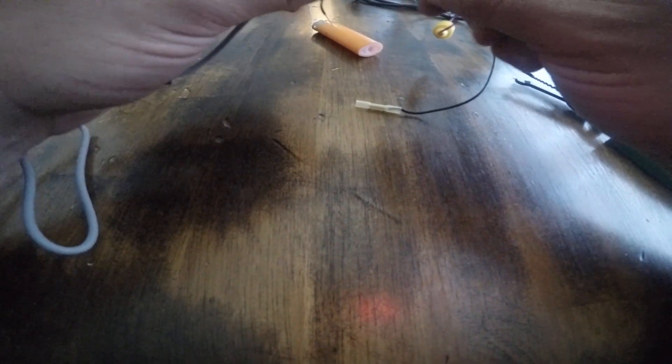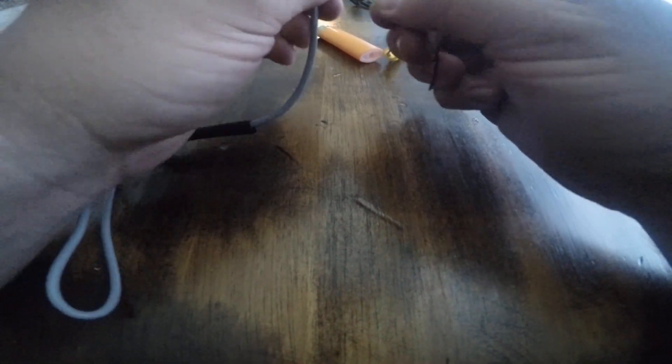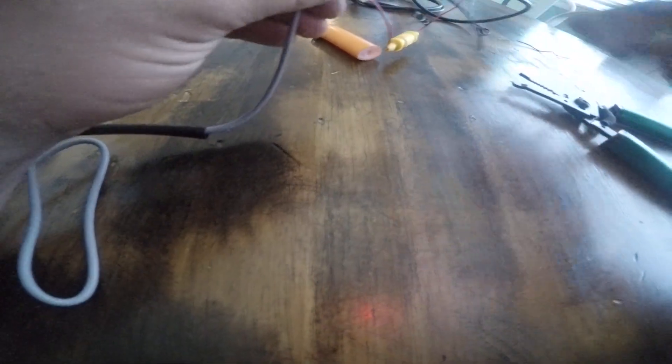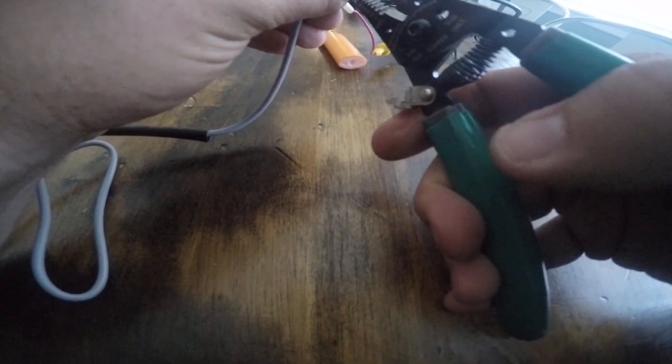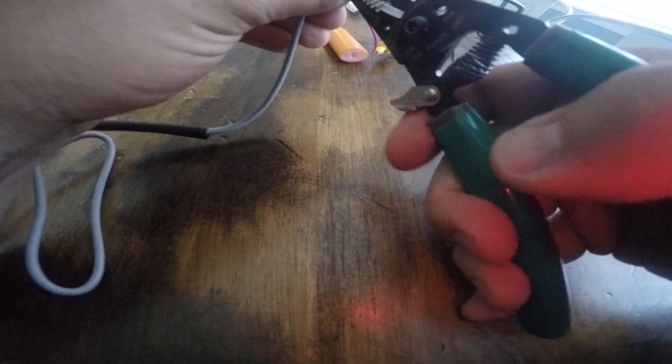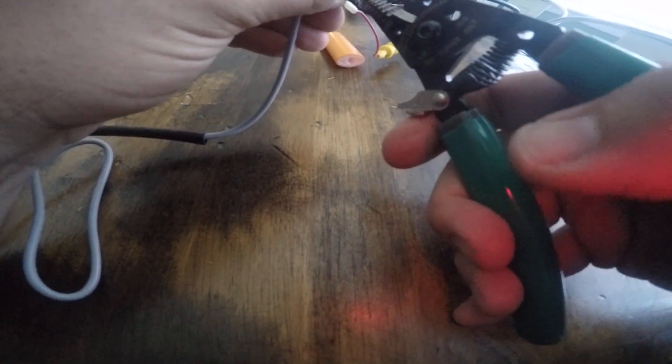Same thing with the black side. You're going to get the crimping device. You're going to stick it in. And you're going to stick the other wire in. And you're going to crimp them so that they do not come apart.